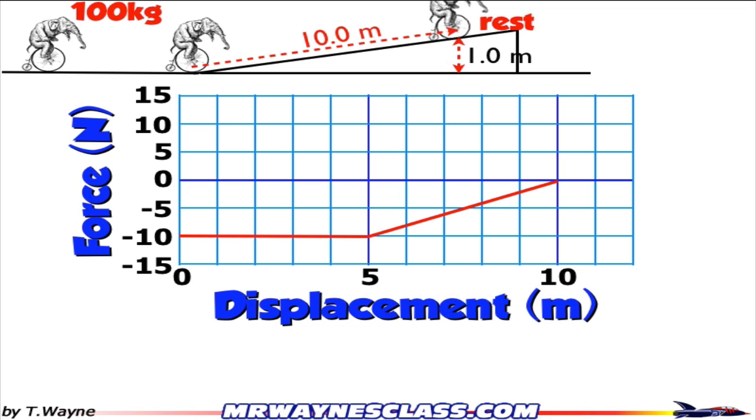And her force looks like this. So you can see it's not a straight line going across the whole graph. It varies over time. For the first 5 meters, it's constant. But between 5 and 10, it changes. So my formula, work is equal to force times distance, will only work for part of this problem. It won't work for the whole thing.